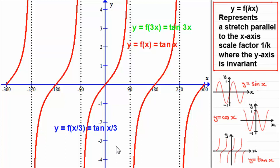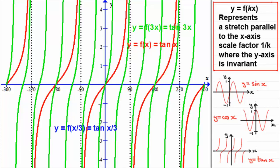Welcome back. For the graph of y equals f of 3x, tan 3x, you should end up with a graph that has a lot of curves — quite compact. The k value is 3, so we have a stretch of scale factor 1 over 3, a third, parallel to the x-axis. Everything gets bunched up towards the y-axis by a scale factor of a third. The asymptote that was at 90 degrees is now at a third of that — 30 degrees. On the other side, the asymptote at minus 90 degrees is now at minus 30 degrees.